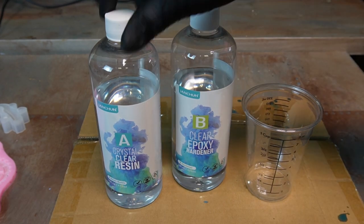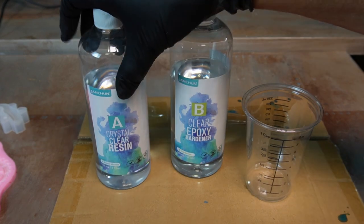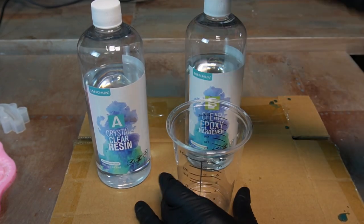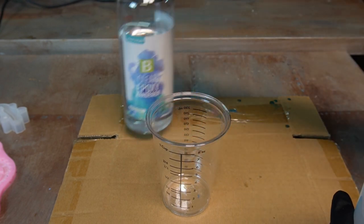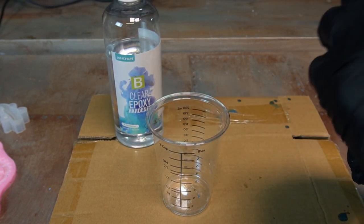These are small molds. I'm only going to mix up two ounces, so I'm going to put one ounce of each. Then it says mix for three to five minutes, but we're going to fast forward through that part.